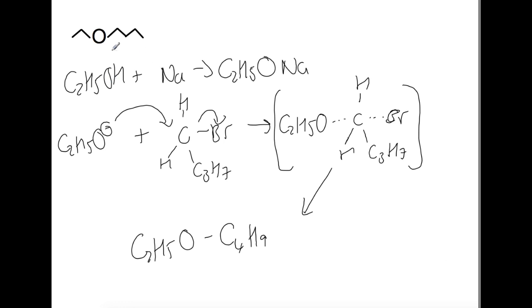You could also have used butanol to produce sodium butoxide as your nucleophile which could then have attacked bromoethane if you wished to produce the same reaction.